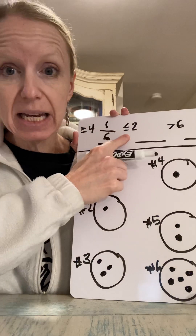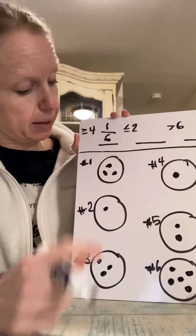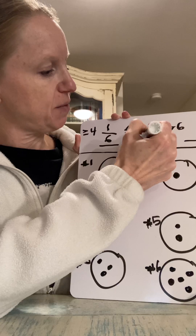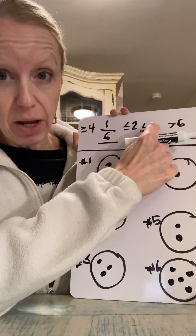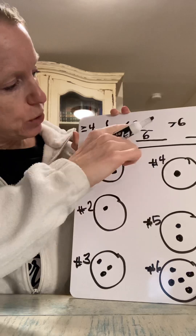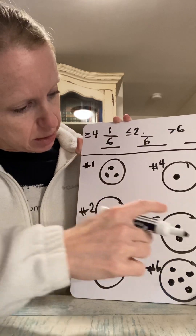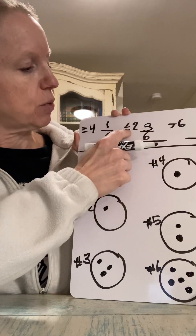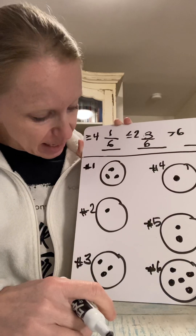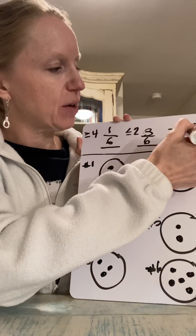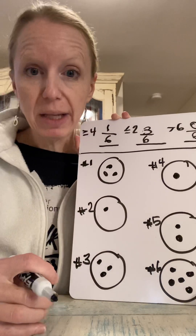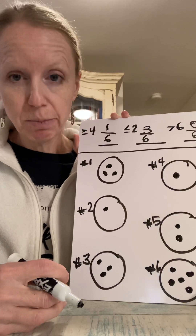How many pancakes have less than or equal to two blueberries? Three out of six. How many have greater than six blueberries? Zero — zero out of six possible pancakes. Those are some probability outcomes we can determine from this experiment. The denominator is the number of pancakes, because that is the question we are asking.